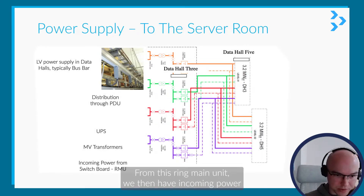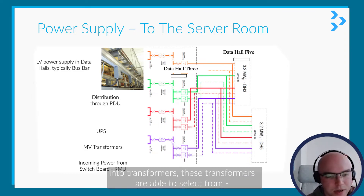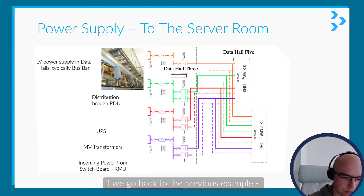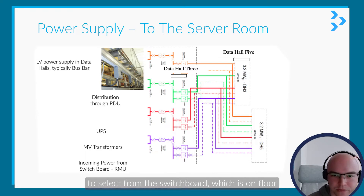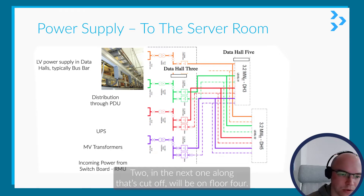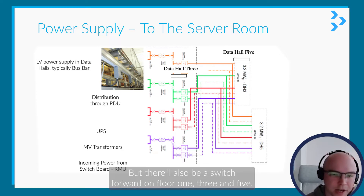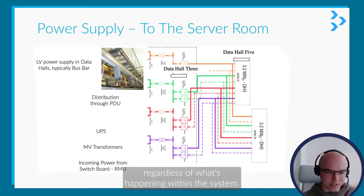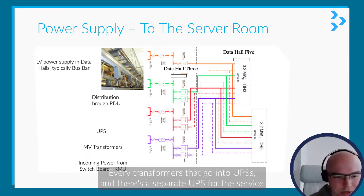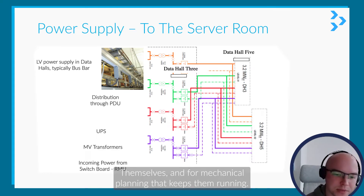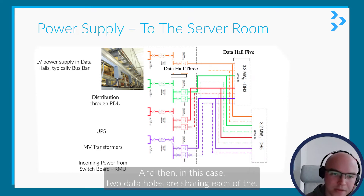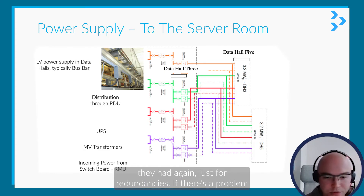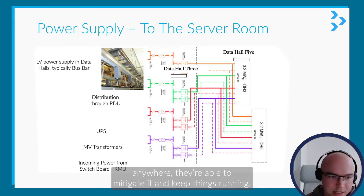From the ring main unit there is incoming power into transformers. These transformers are able to select from the switchboard on floor two, the next one on floor four, as well as switchboards on floors one, three, and five. This redundancy allows them to keep running regardless of failures within the system. MV transformers then feed into UPSs — there's a separate UPS for the servers themselves and for the mechanical plant. In this case, two data halls share each of the four systems for redundancy, so any problem can be mitigated and operations continue.